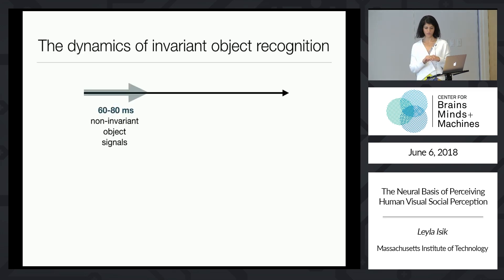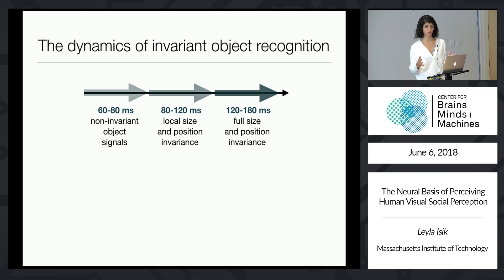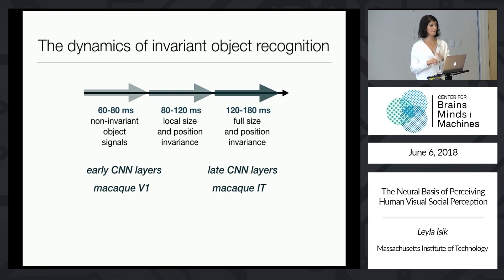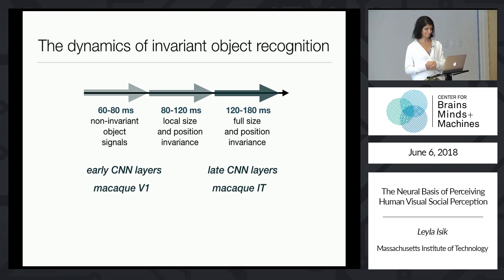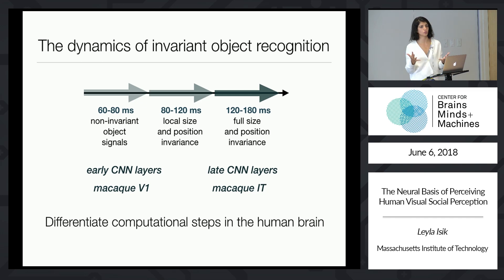To summarize: this gave us a picture of how information about invariant object recognition evolved over time. Between 60 to 80 milliseconds after an image is shown, you can read out signals distinguishing different objects. Invariance to those signals gradually develops over the next 100 or so milliseconds. The early and late stages of human visual processing mapped nicely to early and late layers of a convolutional neural network, and also mapped onto latencies from macaque physiology. This was a nice proof of concept that we could use these tools to differentiate computational steps in the human brain.